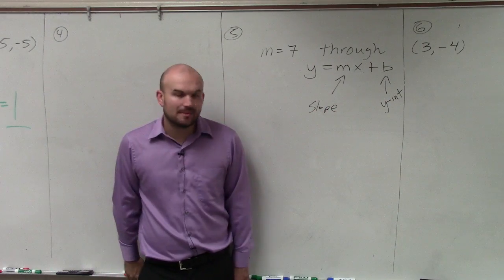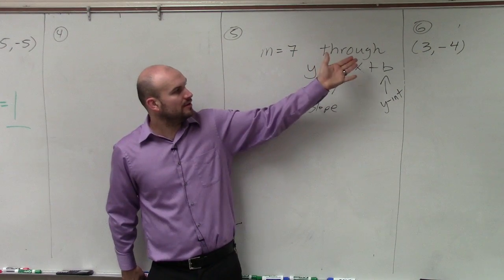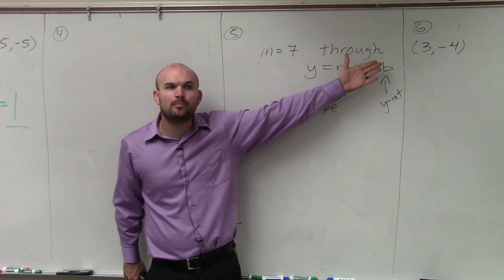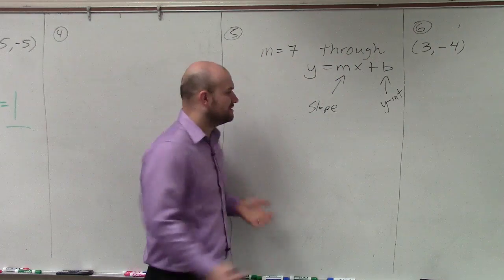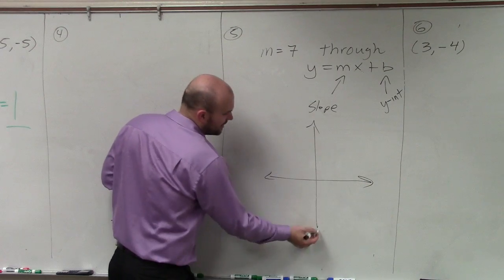Now, the issue with this problem here is that we are given the slope, but we're not given the y-intercept in this case. We're just given the point that the graph goes on. And the last thing I really want to mention, make sure you guys understand, is when we're graphing lines.